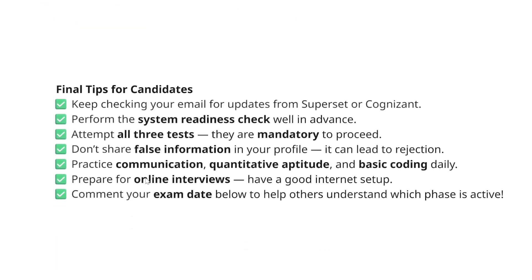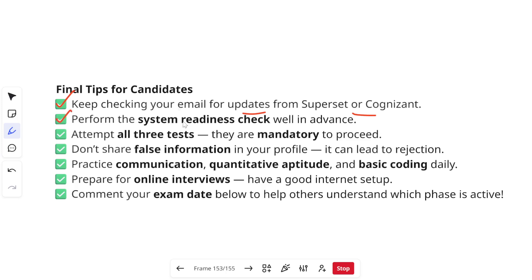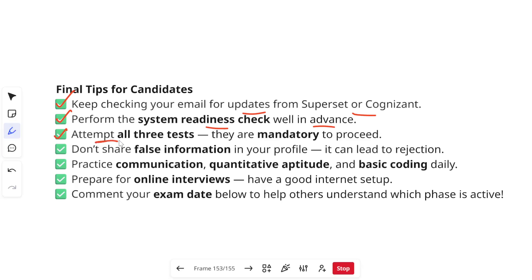Here are some important final tips. First, keep checking your emails regularly for updates from Superset or Cognizant, and also check your spam folder. Second, perform the system readiness check well in advance. If your assessment breaks mid-way, don't panic — resume it as soon as possible within the minimum time frame and it will continue from where you left off. Third, attempt all three tests — communication, aptitude, and technical — as they are all mandatory.